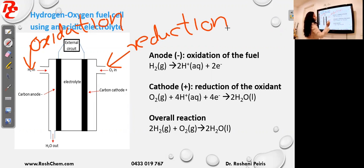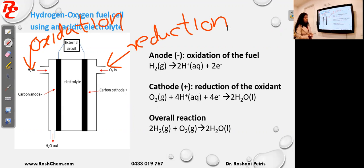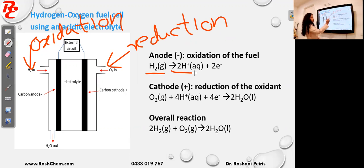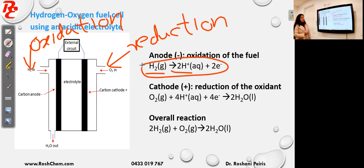Now we will look at the equations. Because hydrogen gas undergoes oxidation that happens at the anode, and the equations depend on the type of electrolyte being used. In this case, I have taken an acidic electrolyte, so hydrogen gas can become H⁺. If the conditions are acidic, I can use H⁺ in my equations. You can also find these reactions in your data book on the electrochemical series.